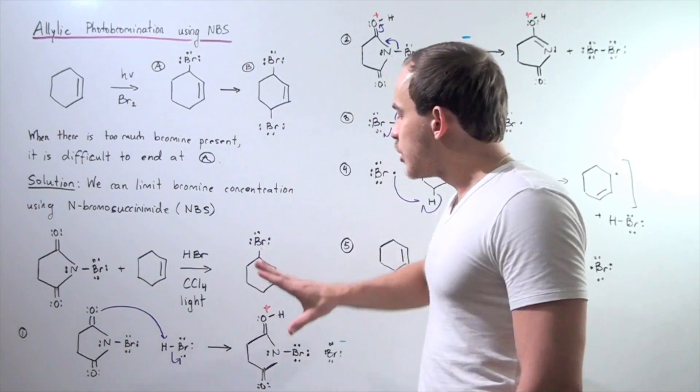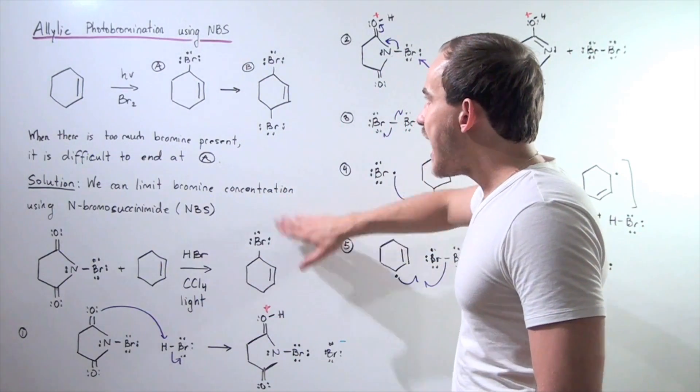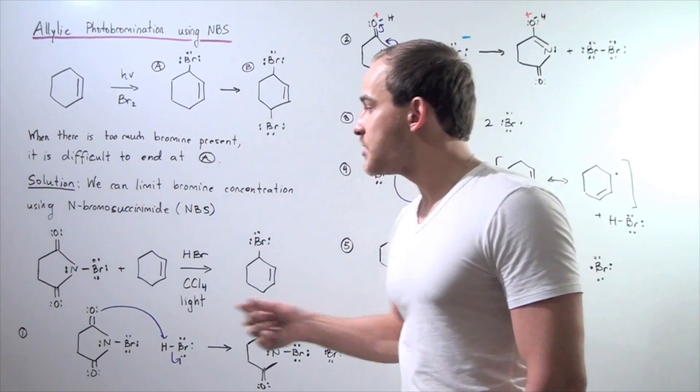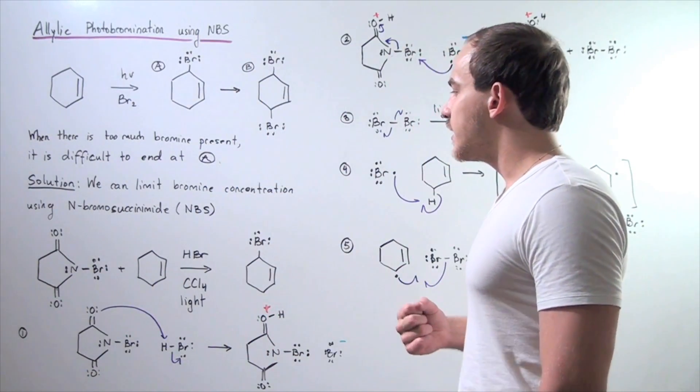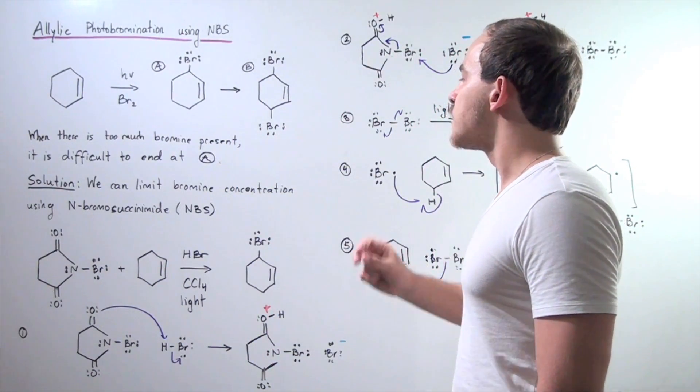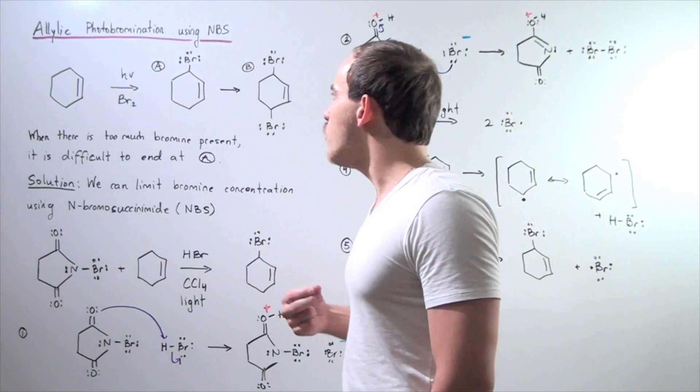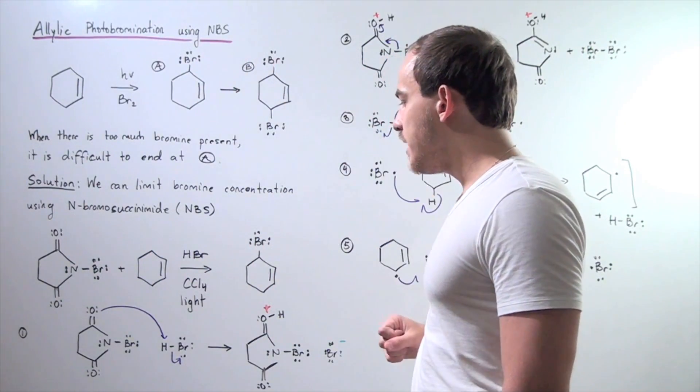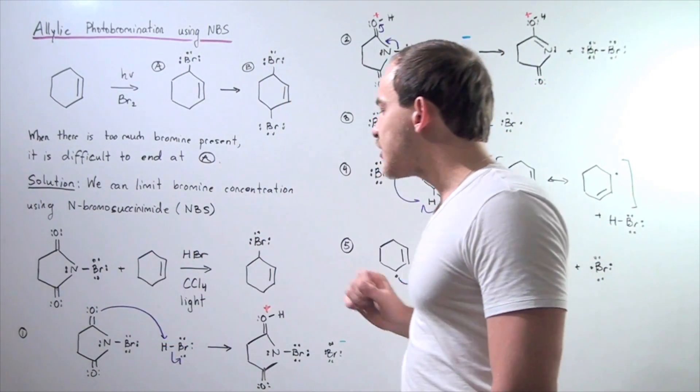We will produce strictly product A and not product B because what NBS does is it limits the concentration of bromine so that we don't have enough bromine to go from A to B. So, what is the reaction mechanism?